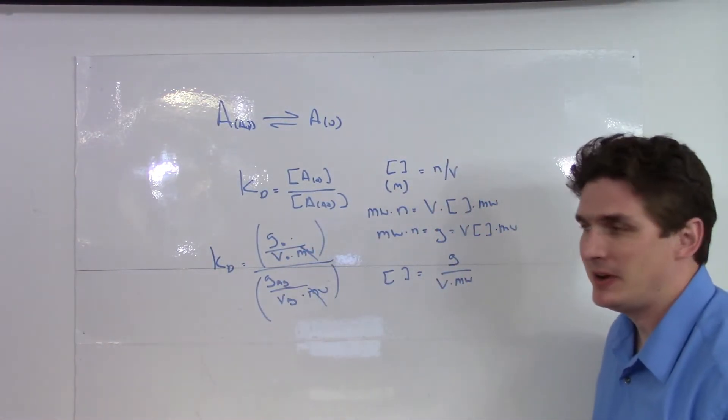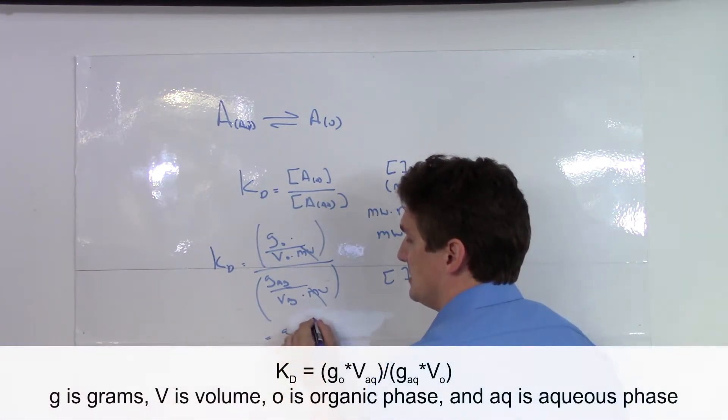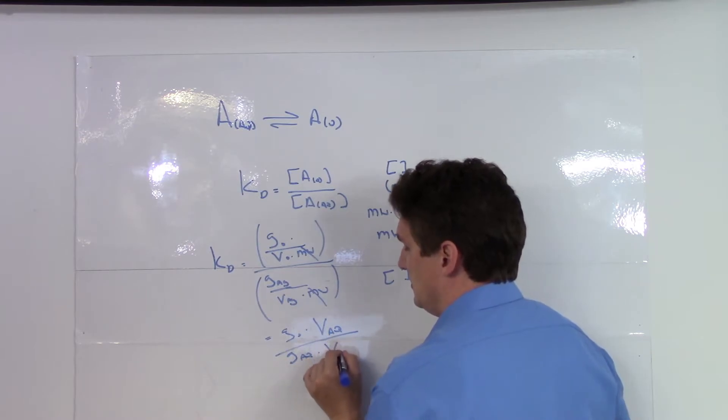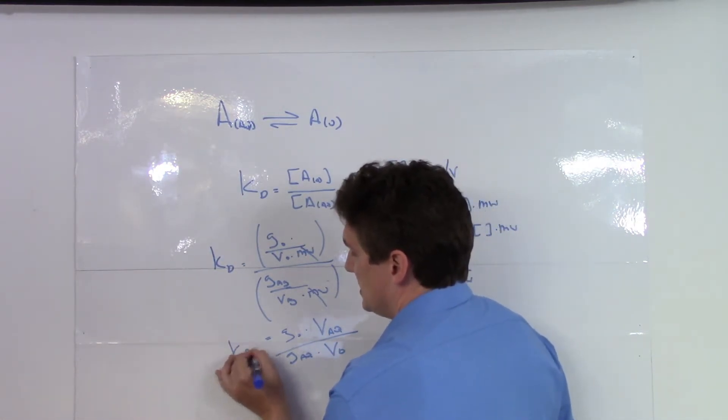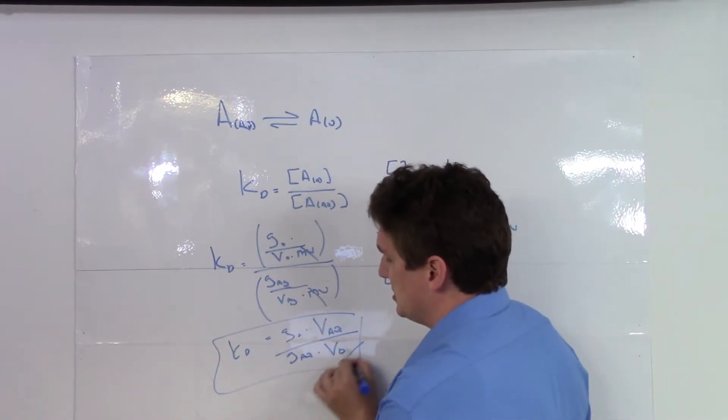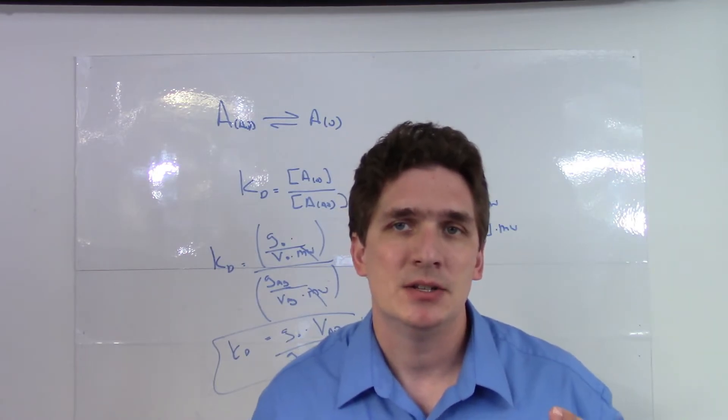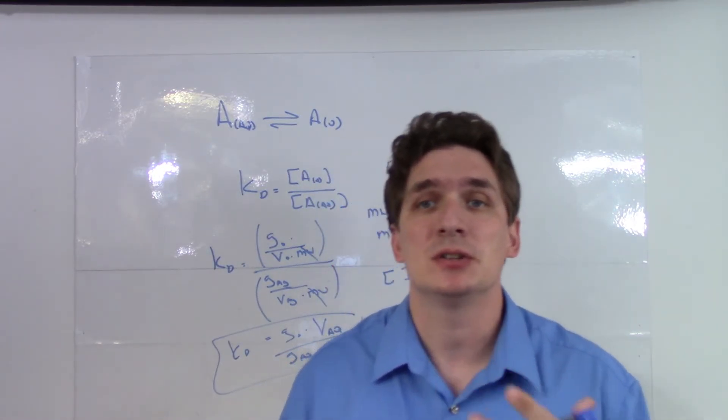So this is where a more practical expression for KD comes from, is that we're going to convert concentration to a function of volume and mass and molecular weight with the molecular weight canceling out.